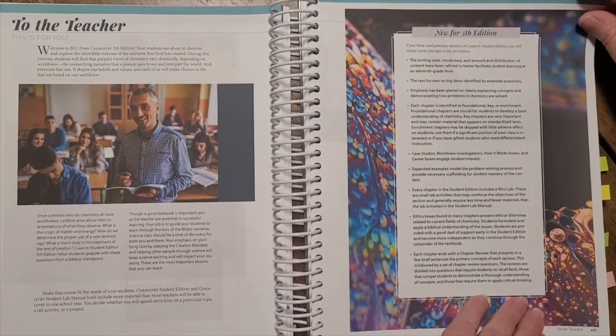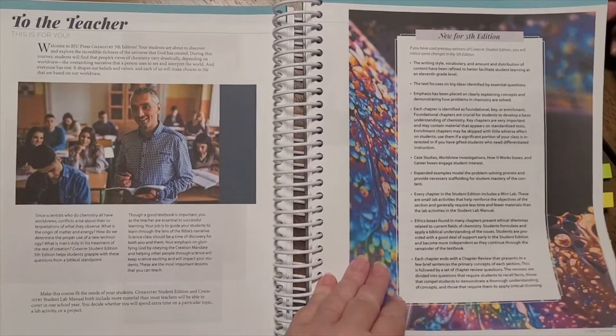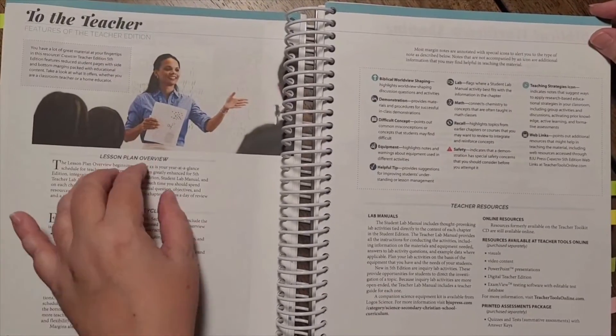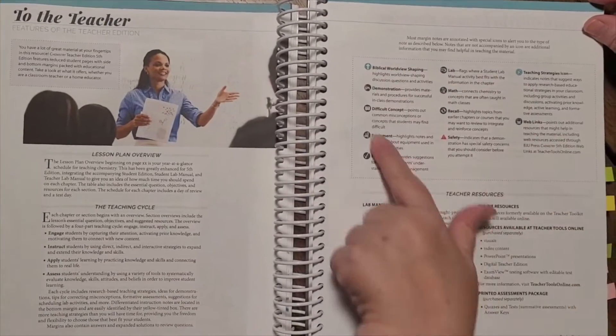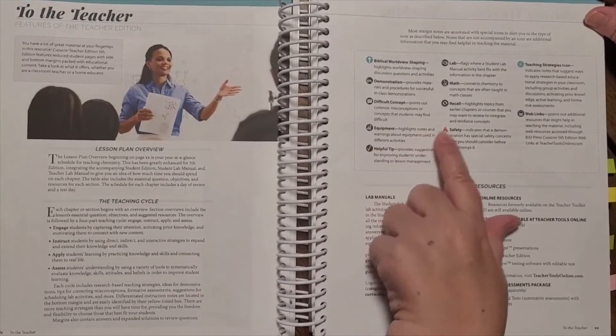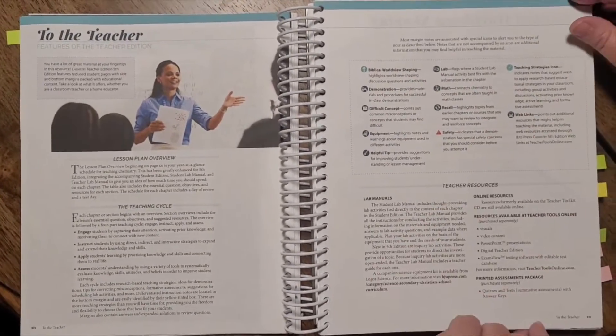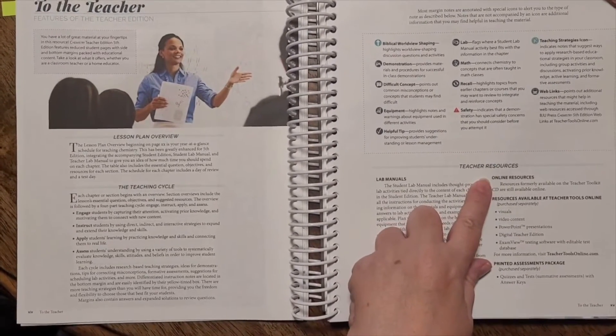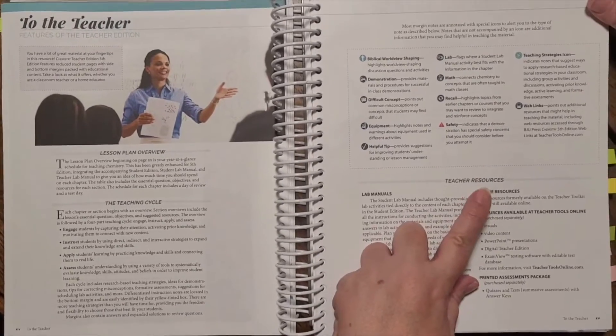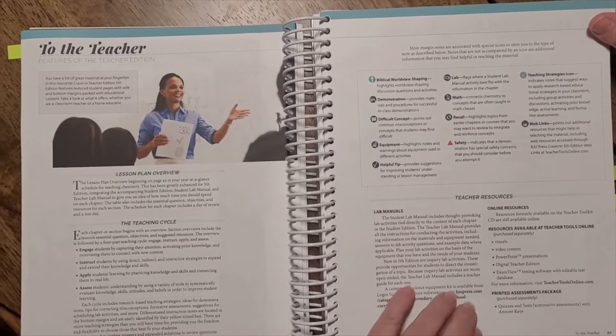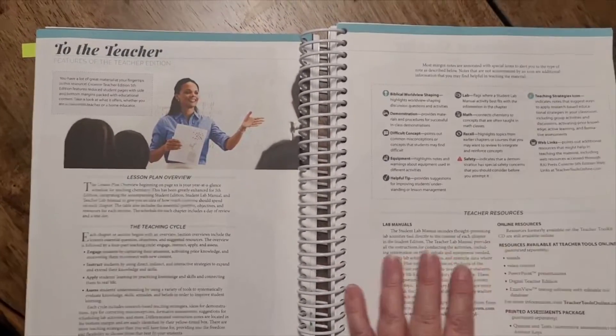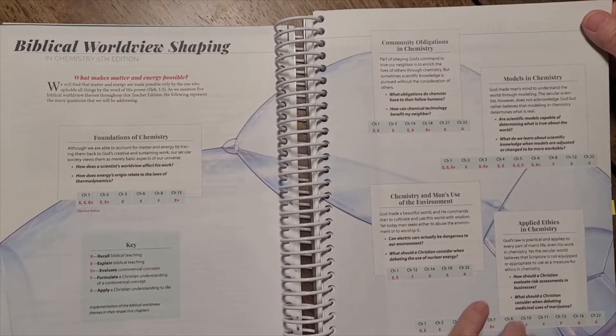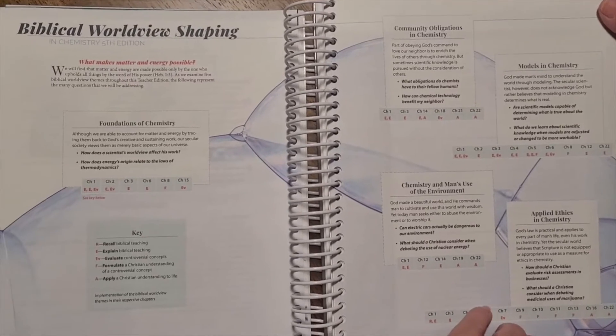Then here we have information that is directed to you as the parent or the teacher. It tells you the different features here that you can look at. This page gives you lesson planning overview, tells you about the teaching cycle. This is key. These are the icons and the definitions for the icons that you need to know as you're using the book. It talks about teacher resources, the lab manual that we'll look at, online resources. These are available to you in the homeschool hub. And then there's also quizzes and tests. Then we have the biblical worldview shaping.